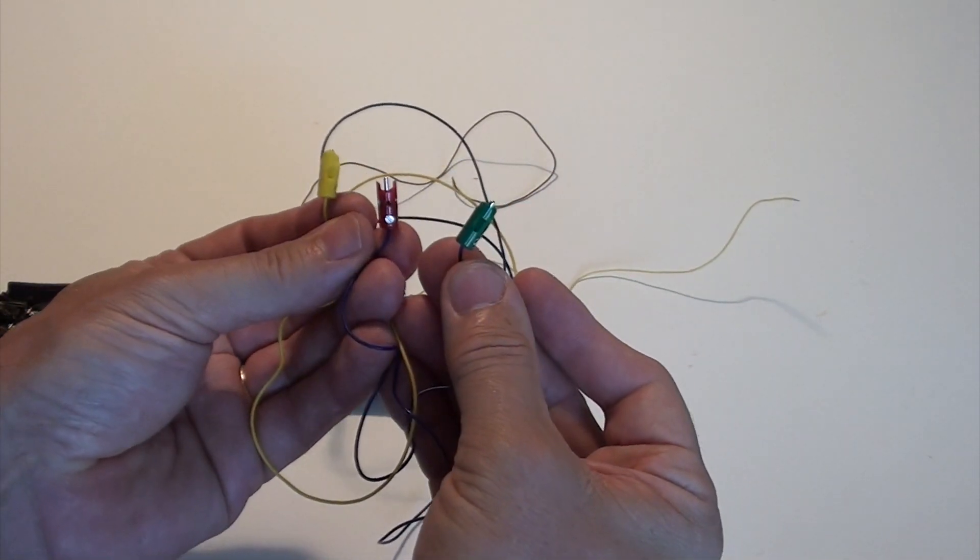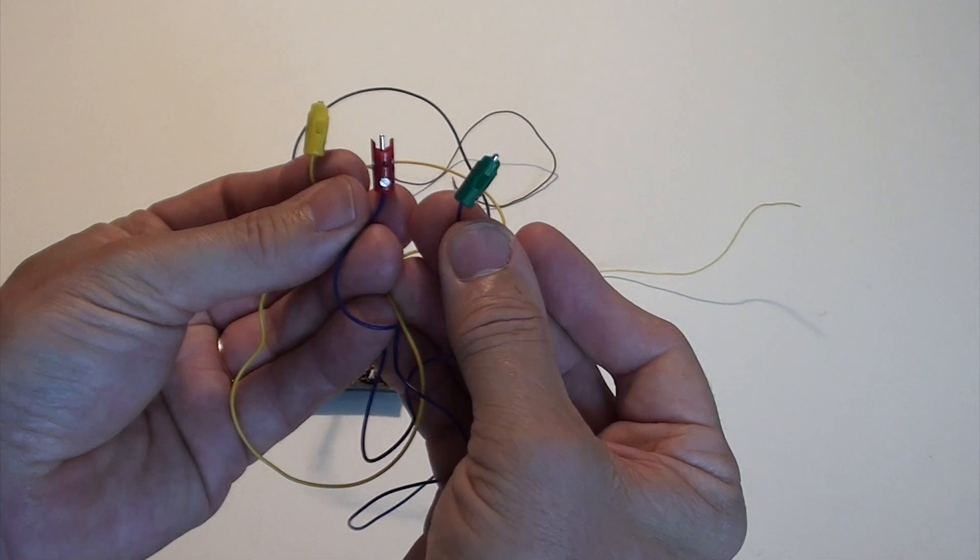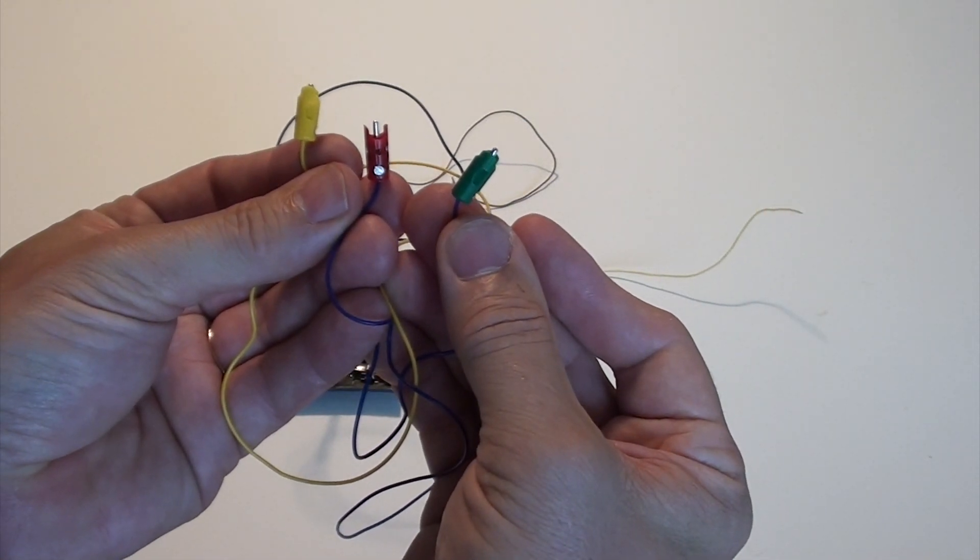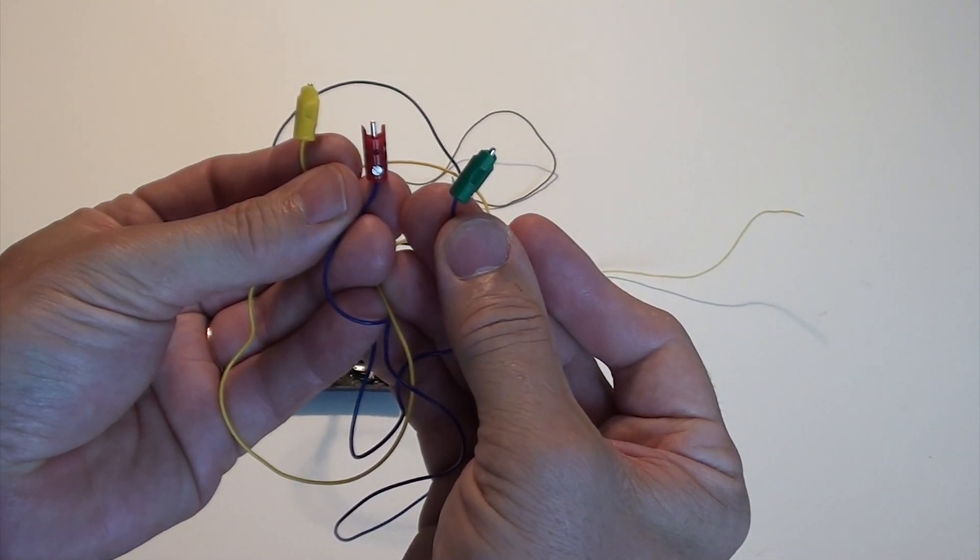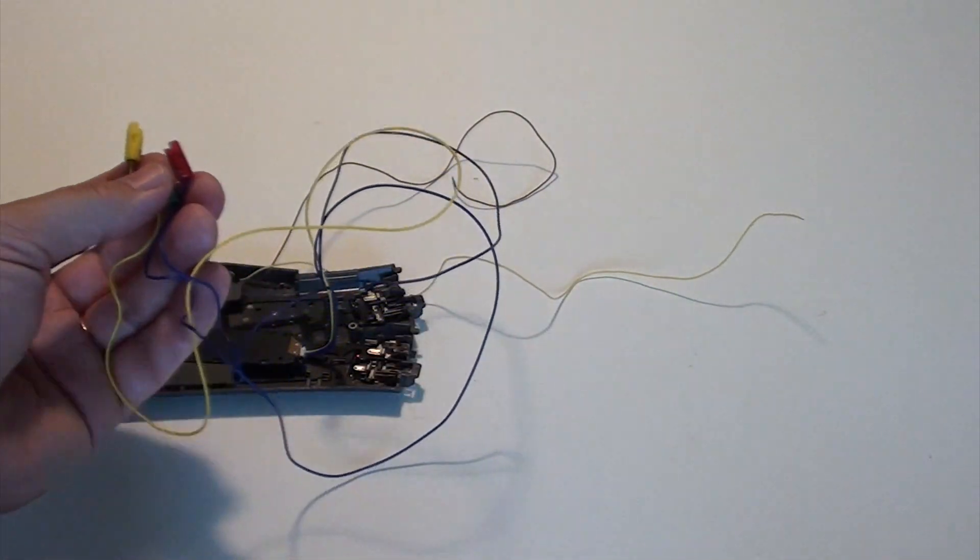And one red goes to one of the blue wires, and a green goes to the other blue wire. Green to set the turnout straight, and red to set the turnout to the curved position.